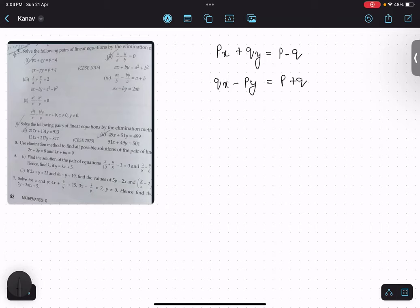First thing in elimination is we need to make the coefficient of one variable same.